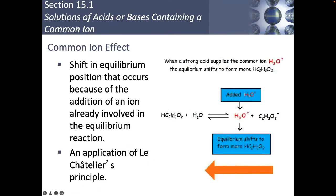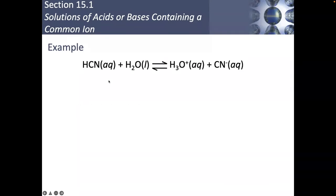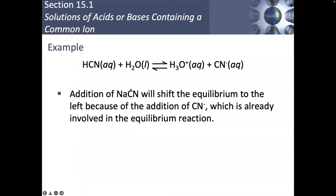For example, I have acetic acid, water, hydronium ions, and an acetate ion. If I decide to add extra acid to this, what that's actually going to do is shift the equilibrium to manufacture more acetic acid. Because we have an ion that is in common, that's going to automatically move towards this direction instead. Another good example: HCN, water, hydronium ion, and cyanide. If I add a pinch of sodium cyanide, cyanide being the common ion, that would be as if this was increasing in amount. So if this is increasing in amount, my equilibrium is going to shift in the opposite direction.